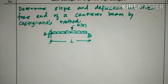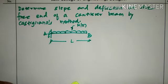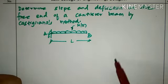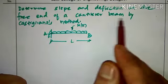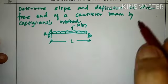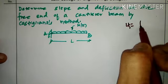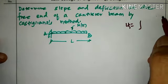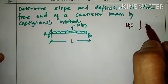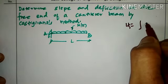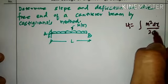The second theorem states that the slope at any position is the partial differentiation of strain energy with respect to the moment. We are going to continue with the same conditions for this particular problem. The problem statement says: determine slope and deflection at the free end of a cantilever beam by Castigliano's method. The expression for strain energy is M² dx divided by 2EI.